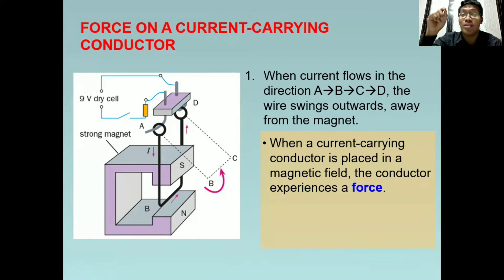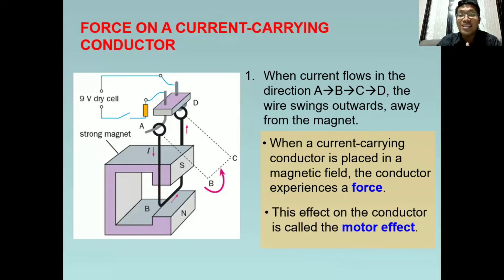Tatandaan natin, na kapag may kuryenteng dumadaloy sa conductor na yan, meron siyang magnetic field. At the same time, nilagay mo siya sa magnet na meron ding magnetic field. At ito ay nagpo-cause ng force. And that is the reason kung bakit nag-move yung wire palayo sa magnet. And this is what we call the motor effect. Ang motor effect ay produkto ng interaction ng dalawang magnetic field: magnetic field ng current carrying conductor at ang magnetic field ng isang strong magnet, which consequently ay nagpo-produce ng force.